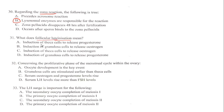Follicular luteinization simply means the induction of glandular cells to release progesterone. Concerning the proliferative phase of the menstrual cycle within the ovary — this question was already explained in part one of the revision, so the answer is A.